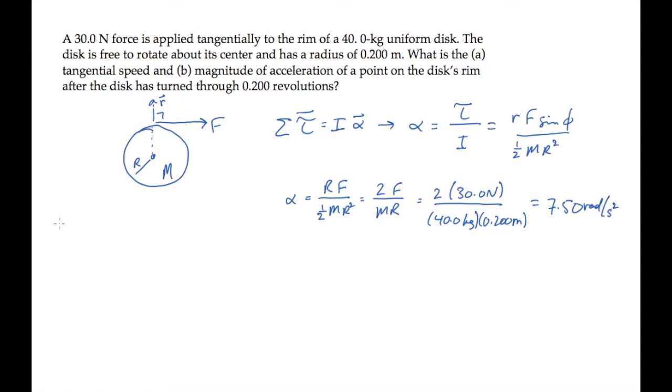Now that we know alpha, we can calculate omega, the final angular speed, after turning through those 0.2 revolutions. Find that using this angular kinematic equation. The disk starts from rest, so omega naught is zero.